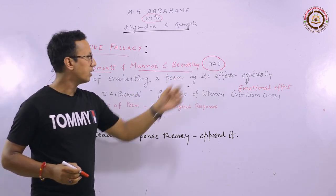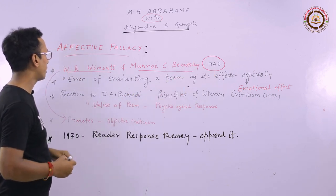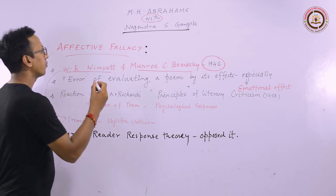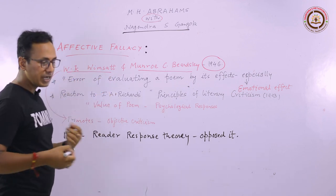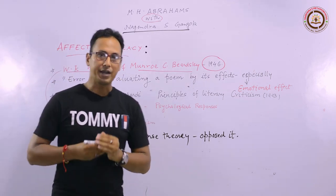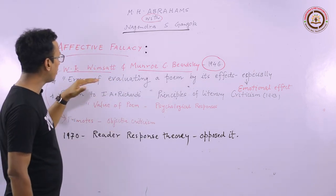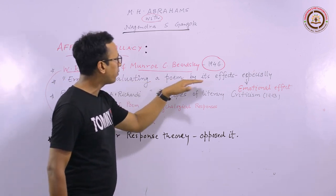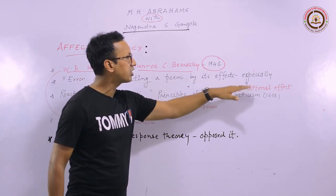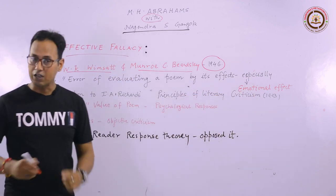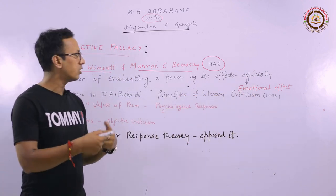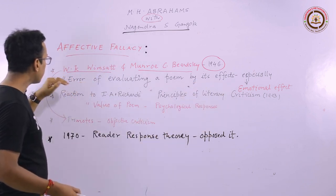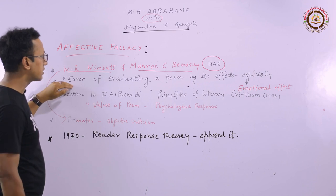This theory says that we commit an error while evaluating a poem, and that error is done when we evaluate a poem by its effects — especially its emotional effects. I will explore this further afterwards. Let me first tell you why this theory came into existence and what they mean by emotional effect.